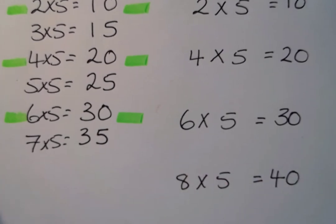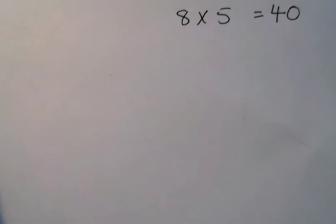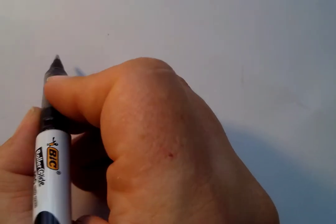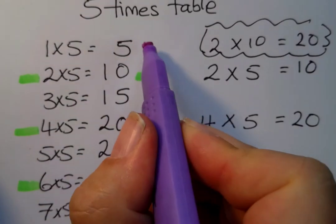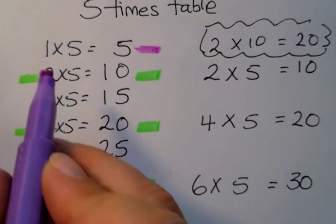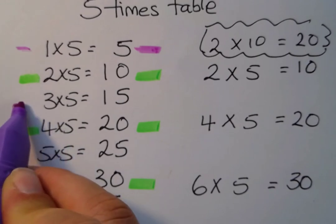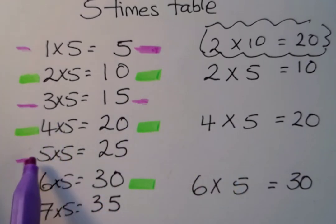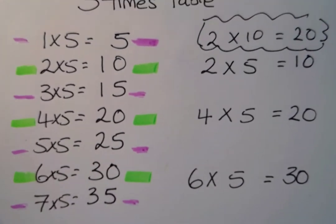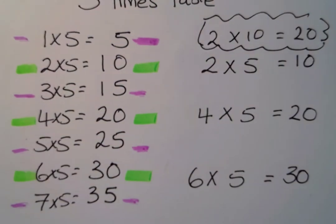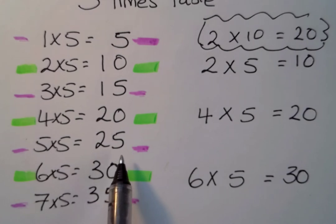What about those odd numbers? This odd number ends in a five, this one ends in a five, this one ends in a five, and seven times five ends in a five as well. We've spotted a pattern: all the odd numbers, when we multiply an odd number by five, we end up with a five in the ones place.